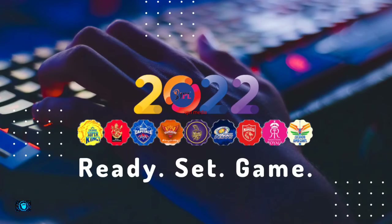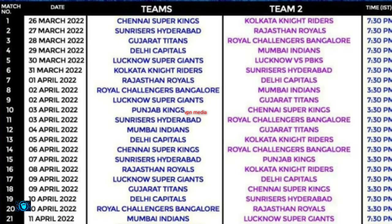IPL Schedule 2022. March 26th: Chennai Super Kings vs Kolkata Knight Riders. March 27th: Sunrisers Hyderabad vs Rajasthan Royals.